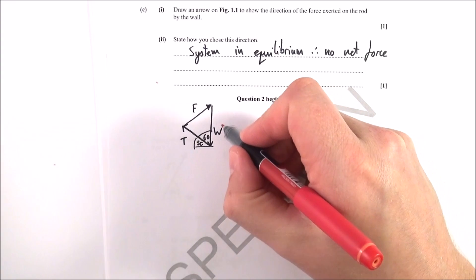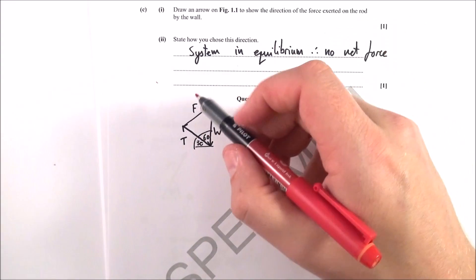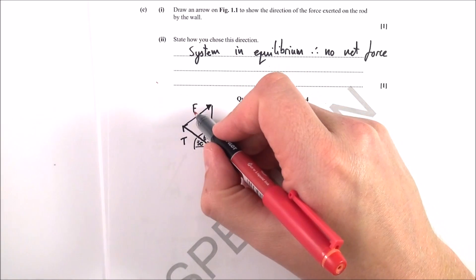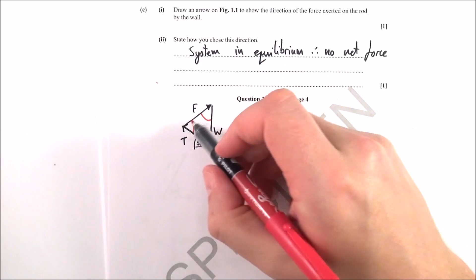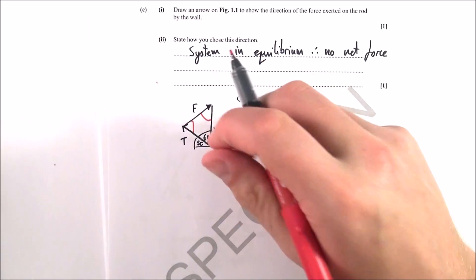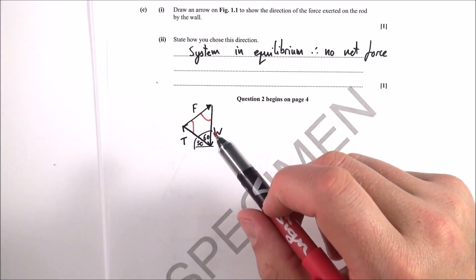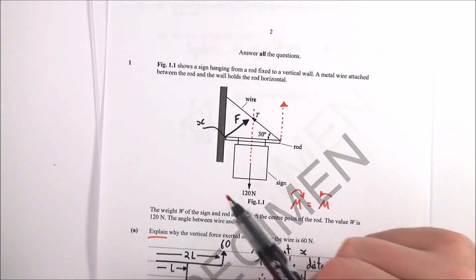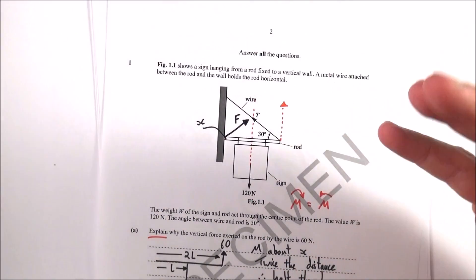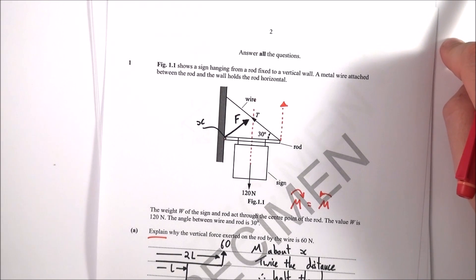We also know in this case the weight is 120 newtons acting down, the tension is 120, and therefore if that's at 60 and that side there is 120 we also know that this angle here and this angle here are both equal to 60 as well and we have a nice equilateral triangle. So that's why I drew the force arrow in this position on that first question. So I hope that explanation makes it all kind of quite clear and now my next video up here is all about question two.